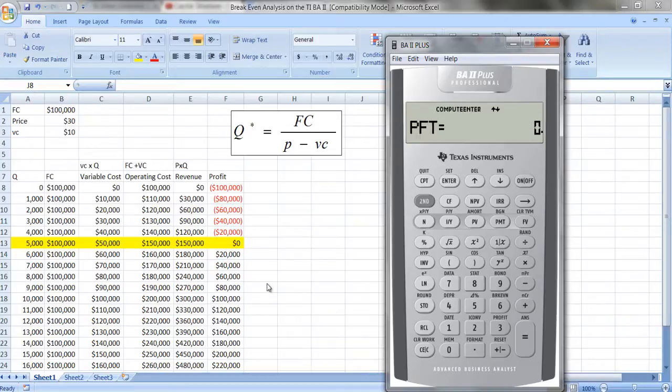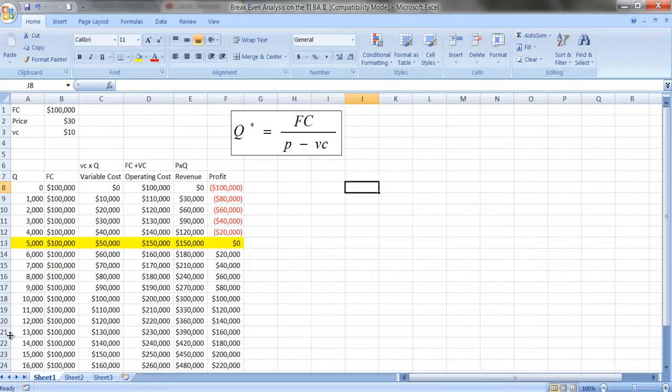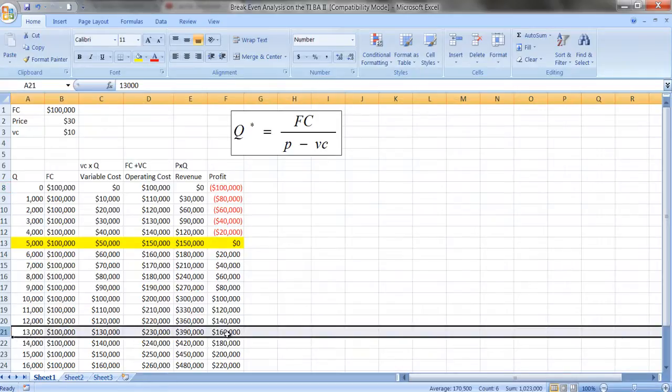But you can also put in different profits. So let's say we want to have a profit of $160,000. Let's see what the breakeven quantity is now. The breakeven quantity is 13,000. Let's see here. Is that correct? At a profit of $160,000, we get a quantity of 13,000.